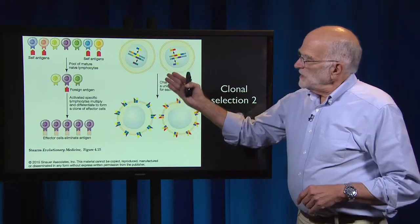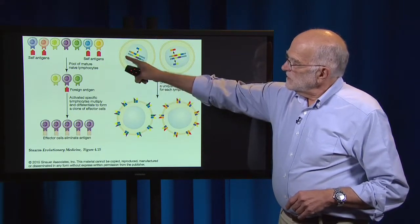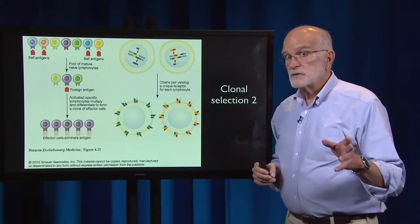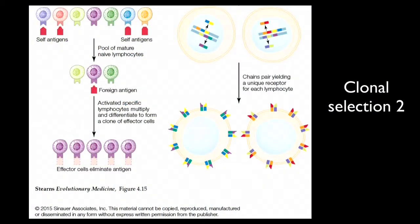During this process, cells expressing self-antigen that could cause autoimmune diseases are eliminated. That gives a pool of mature, naive lymphocytes which potentially could react with foreign antigens, but not with self. Then they encounter a foreign antigen, and one of them — the purple one in this case — actually expresses an antibody that binds to it.